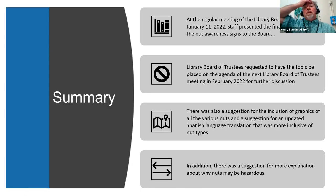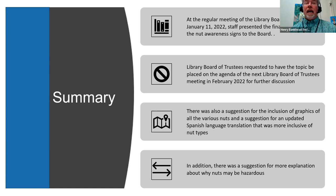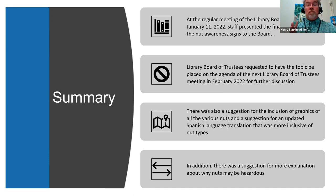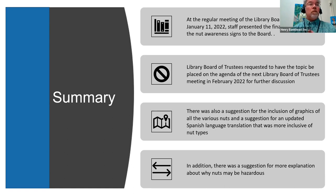Last meeting, January 11th, 2022, we brought some signs during the city librarian comments. The board then requested that we bring this back because there's been a sort of series of events over more than the past two years. There was a suggestion of the inclusion of graphics of various nuts and for the Spanish language translation to include more than just walnut types like peanuts, which is very helpful. Also a suggestion for more of an explanation of what the phenomenon may be, because it seems to be a hyper-local concern and people from other parts of the world might not understand it.